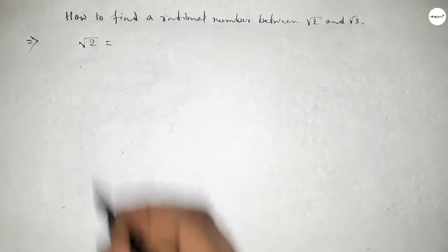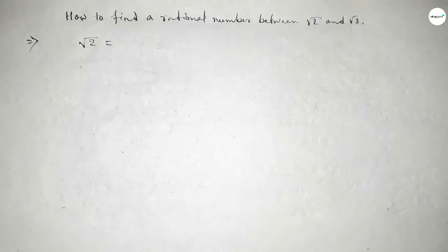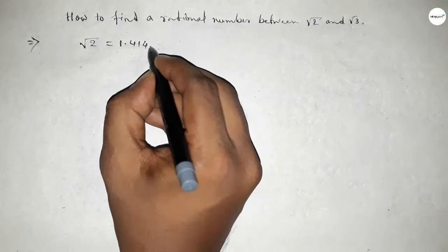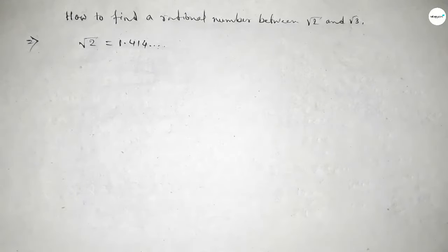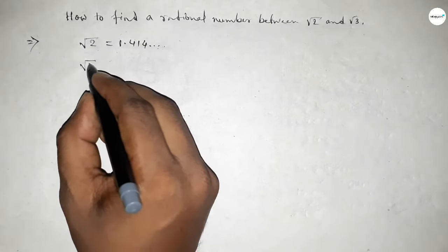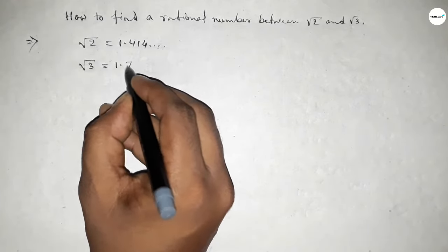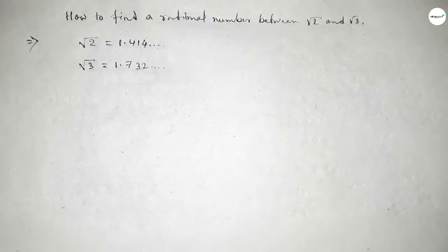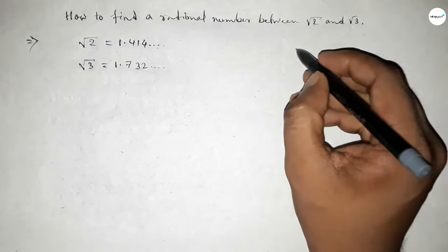We know that √2 = 1.414... and √3 = 1.732... If you don't know how to find the value of √2 and √3, please watch my video which I give in the i-button.